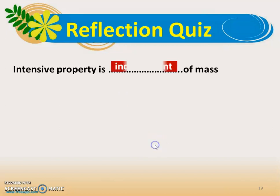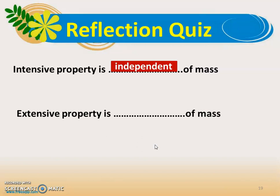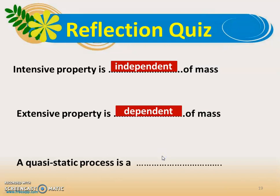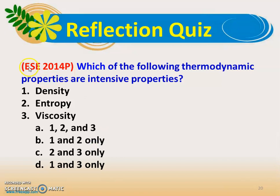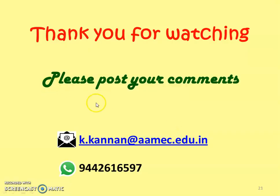We stop here. We have three questions. Intensive property is independent of mass. Next: extensive property is dash of mass — the answer is dependent on mass. Quasi-static process is a reversible process. There is also a question from the Engineering Services Examination 2014: which of the following thermodynamic properties are intensive properties? Density, entropy, viscosity — the correct answer is 1 and 3: density and viscosity are intensive properties. Thank you for watching. Please post your comments in the comments box. We will meet again in another video lecture on thermodynamics.